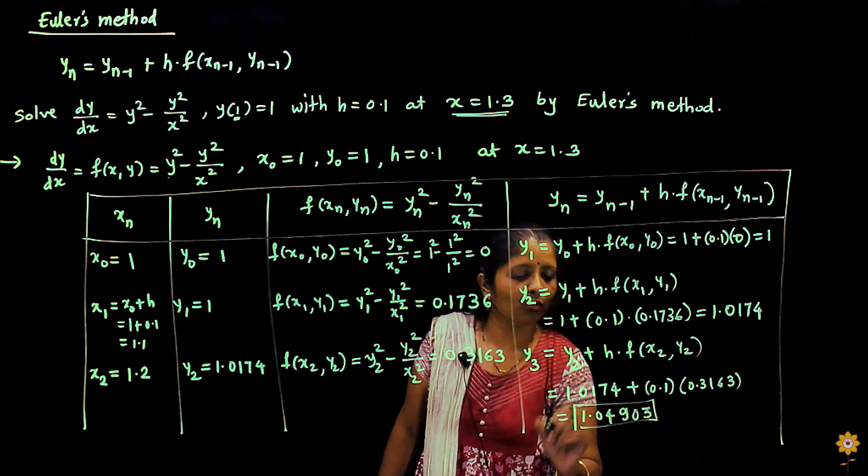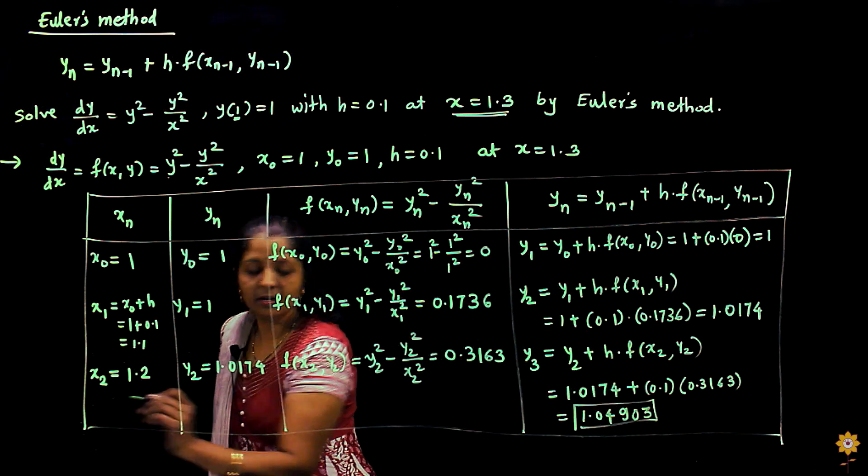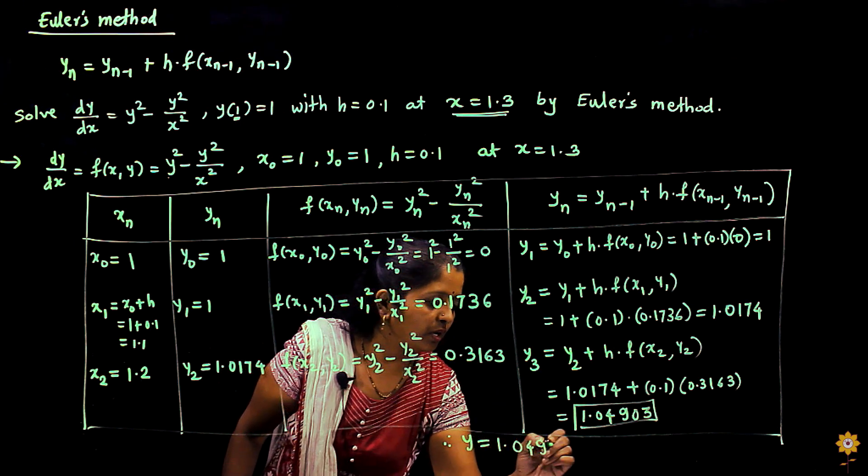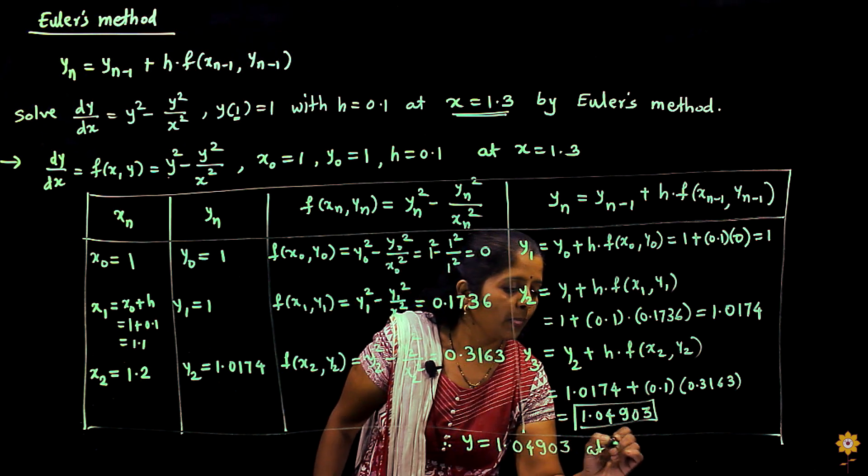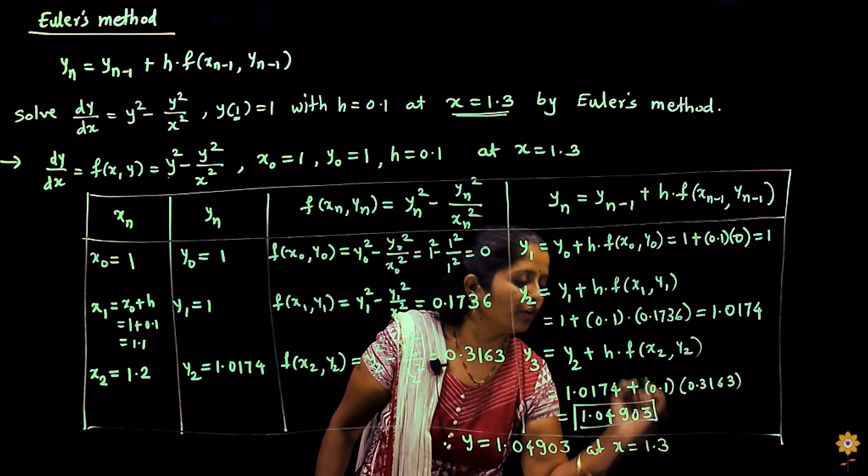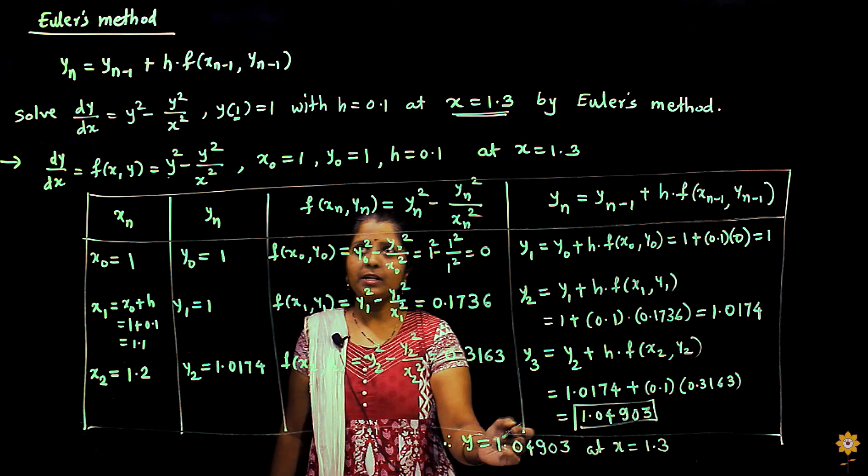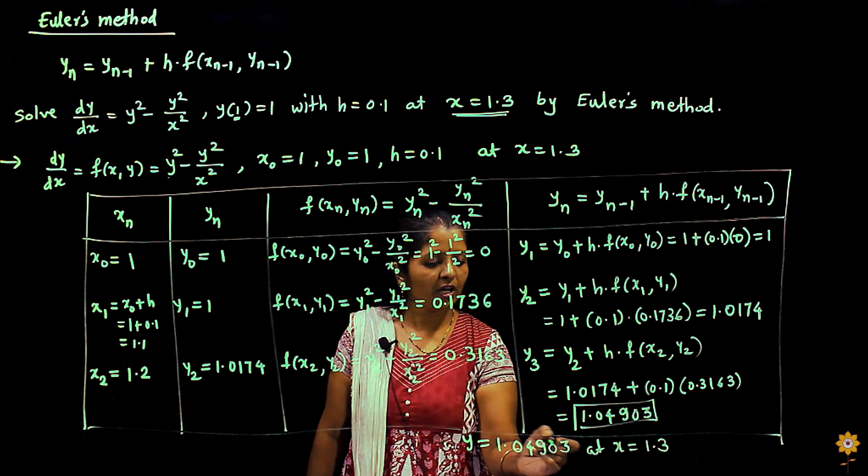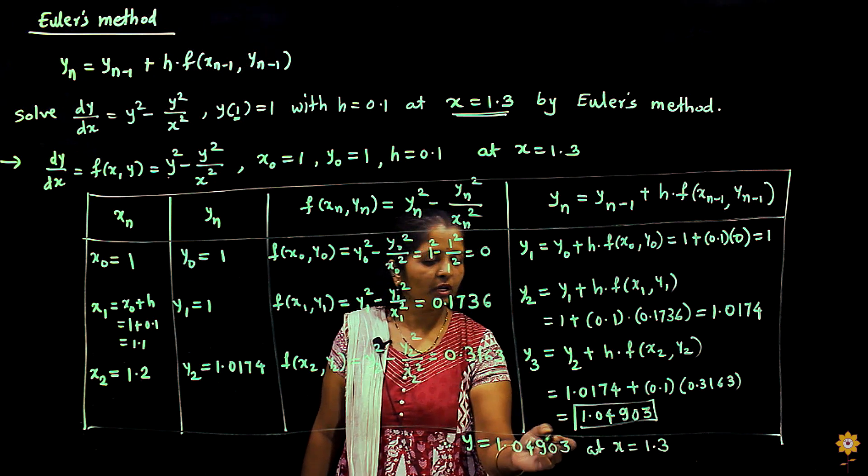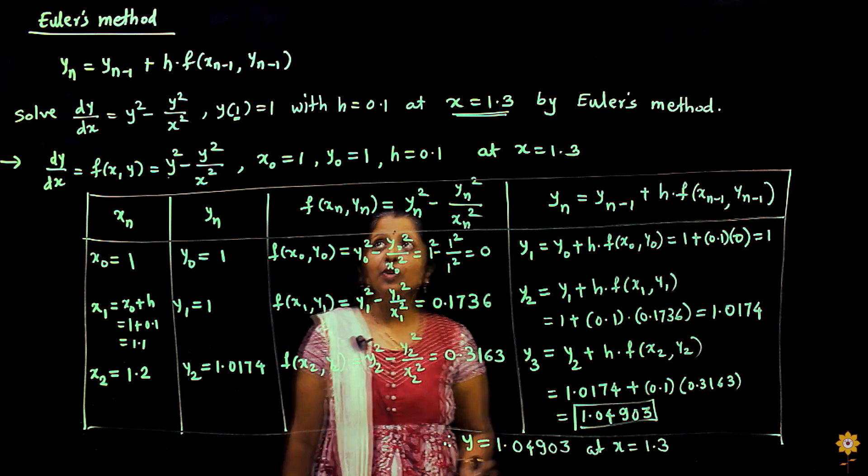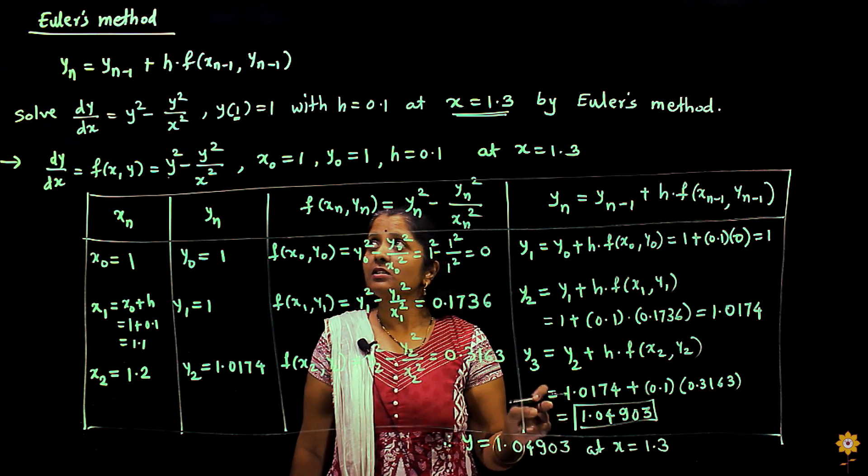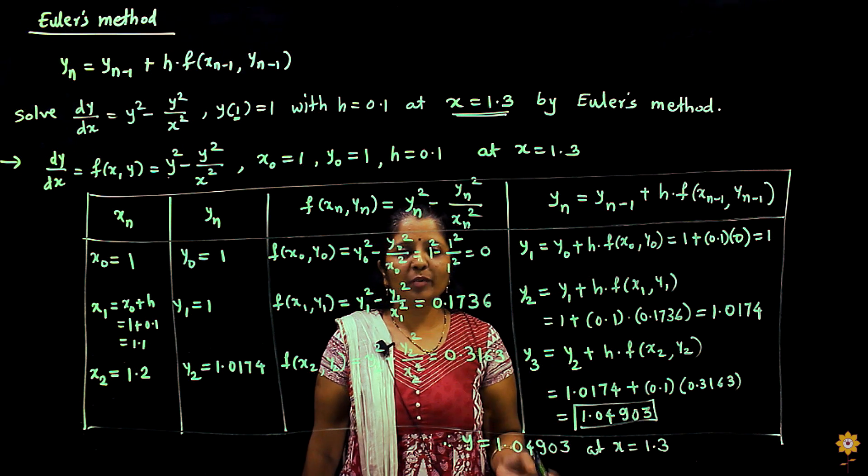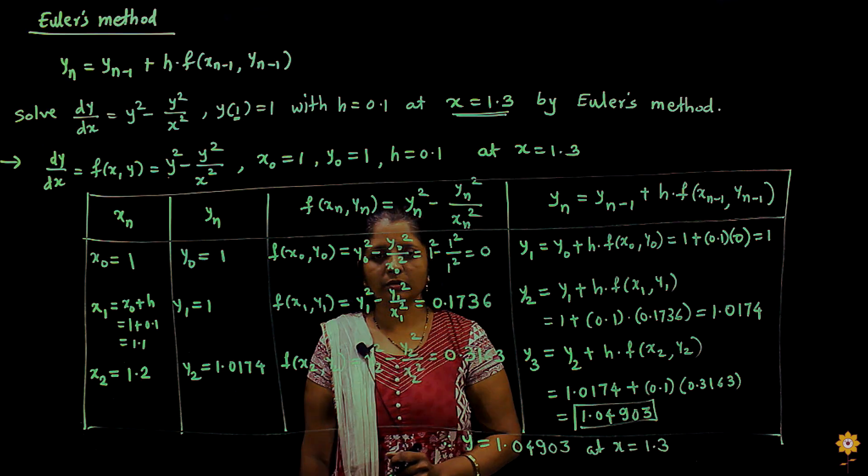This is our required value of y, which we can conclude at the end: y = 1.04903 at x = 1.3. One thing you have to remember is that in numerical methods you have to write your answers till four decimal places. Thank you. In this method we have discussed the Euler's method example. In the next lecture we will discuss one more method for numerical differentiation. Thank you.